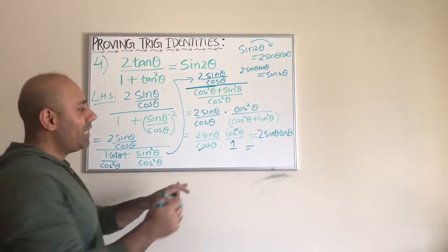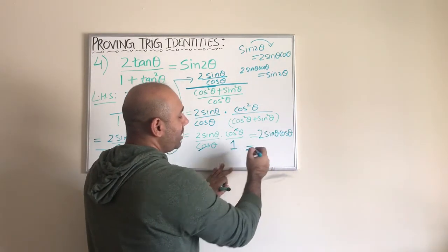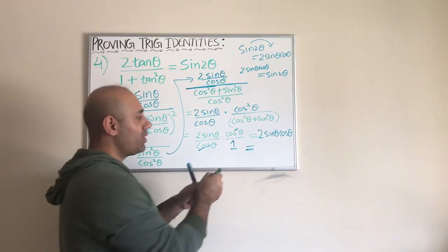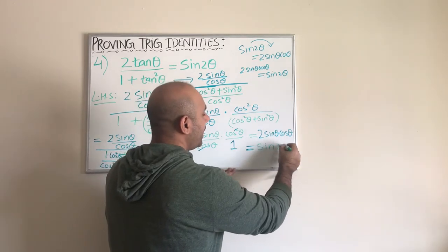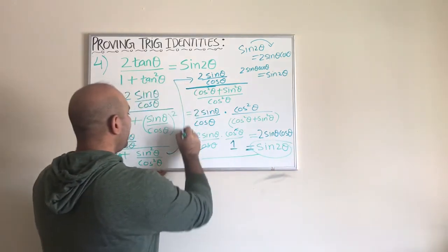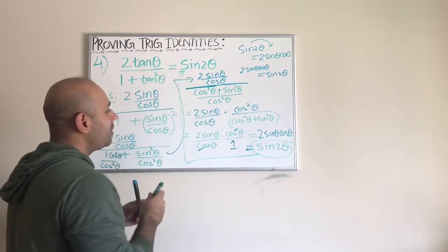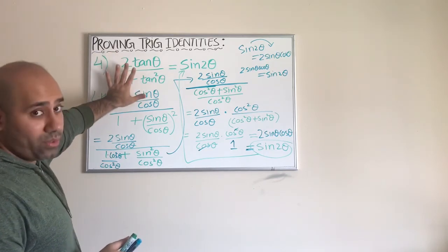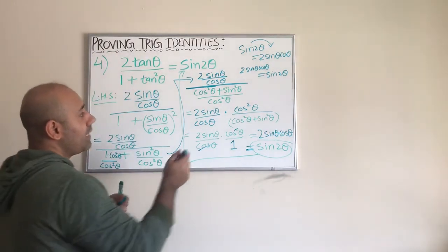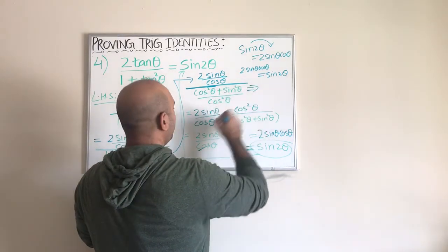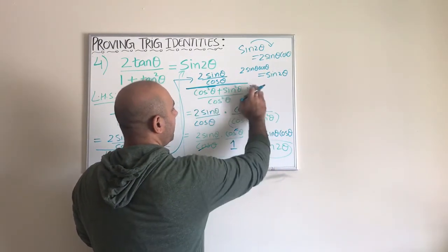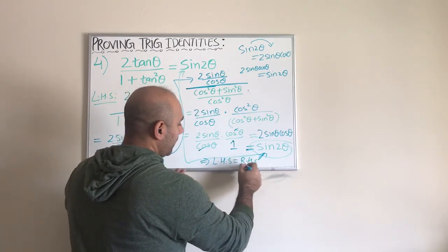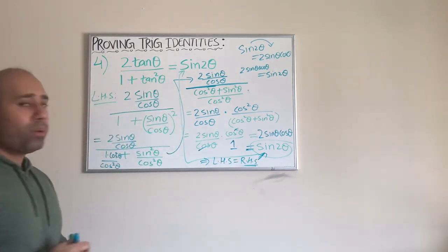So if sine two theta equals two sine theta cosine theta, then two sine theta cosine theta also equals sine two theta — it works both ways. Using the double angle identity from the formula sheet, we can say this equals sine of two theta, which is exactly what the right hand side looks like. We have proven that the left hand side, expressed only with tangent, equals sine of two theta, confirming LHS equals RHS.